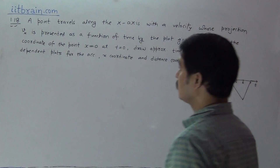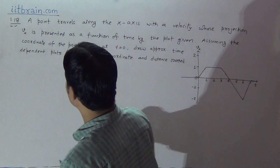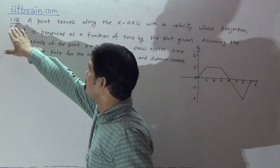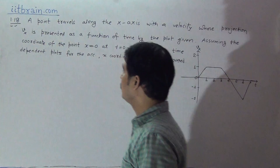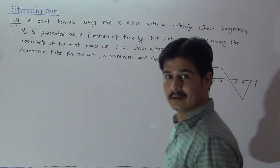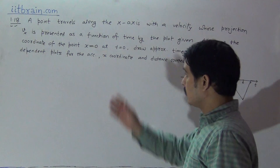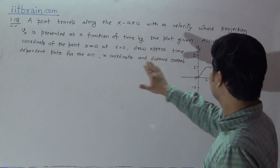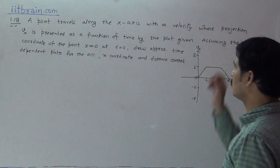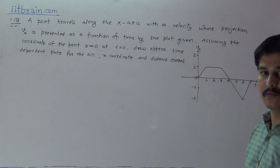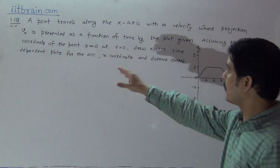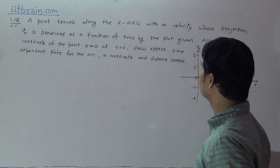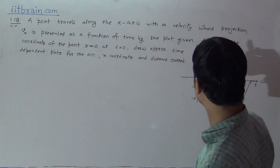Hello students, this is problem 1.18, chapter 1. The question is: a point travels along the x-axis with a velocity whose projection vx is presented as a function of time by the plot given.